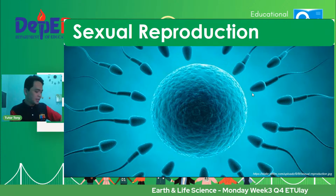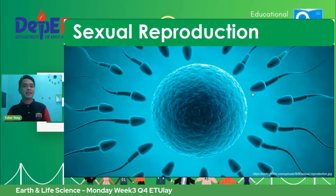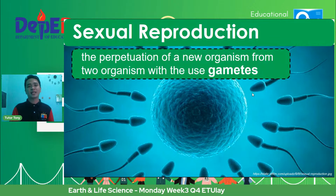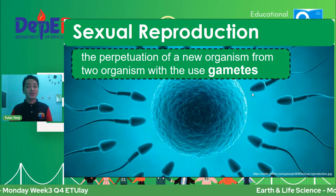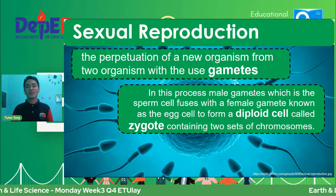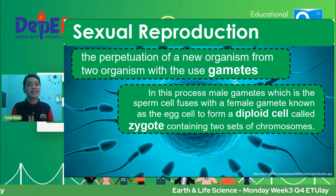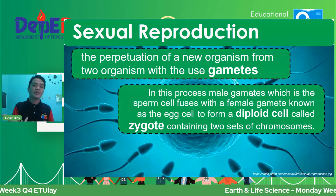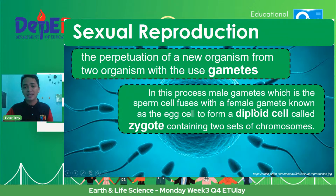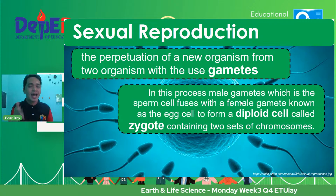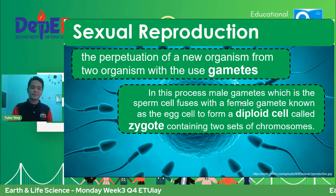Let's proceed with the discussion of sexual reproduction. Here are the key points. Kanina, isang parent lang — for sexual, dalawang parents na. It is the perpetuation of a new organism from two organisms with the use of gametes — sperm and egg. The male gamete, which is the sperm cell, fuses with the female gamete, the egg cell, to form a diploid cell called the zygote — the fertilized egg. It contains two sets of chromosomes from the mother and the father. That is called haploid — H-A-P-L-O-I-D — and diploid.